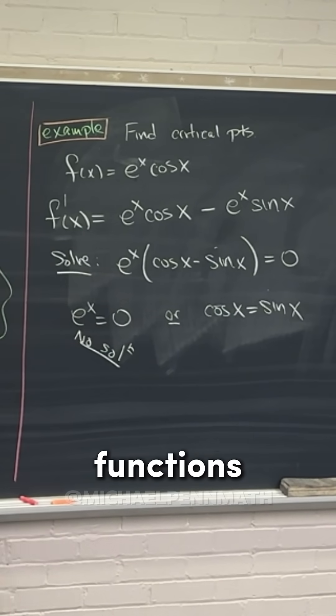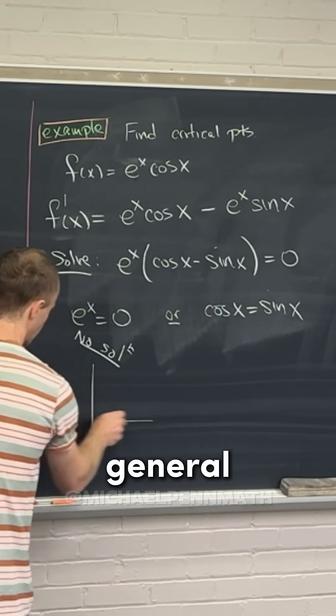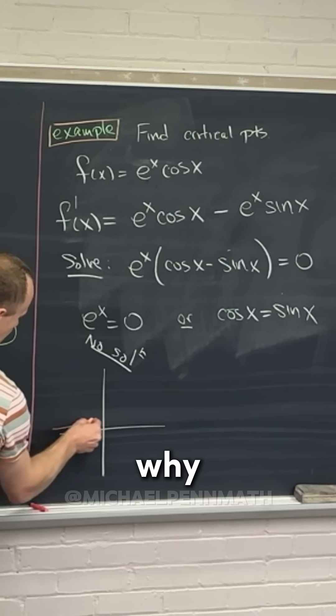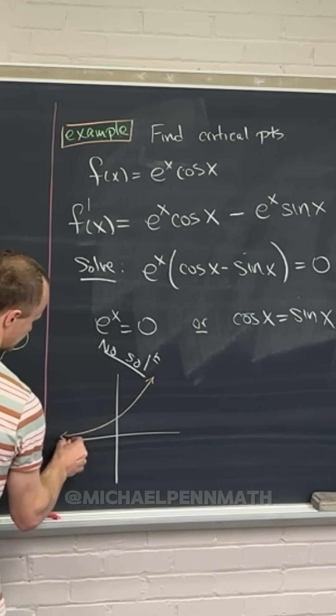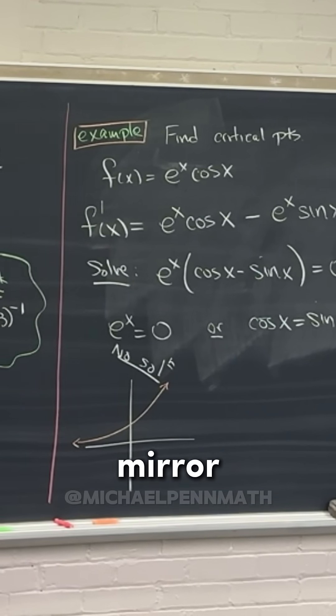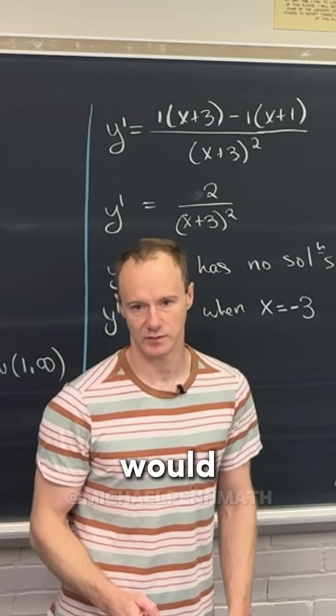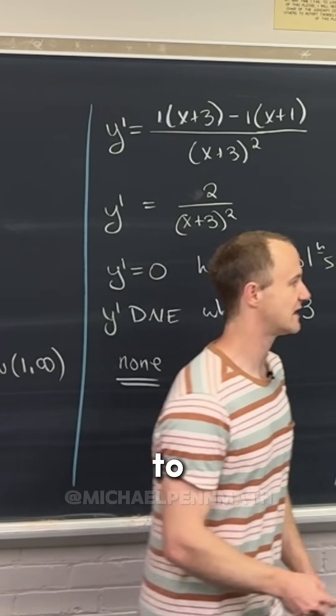So exponential functions, real exponential functions are never zero. And just recall the general shape of a real exponential function, and we'll kind of know why. They look like this. Or maybe the mirror image of that. The important thing is they never cross the x-axis, right, which is where they would be equal to zero. So there's no solution to that.